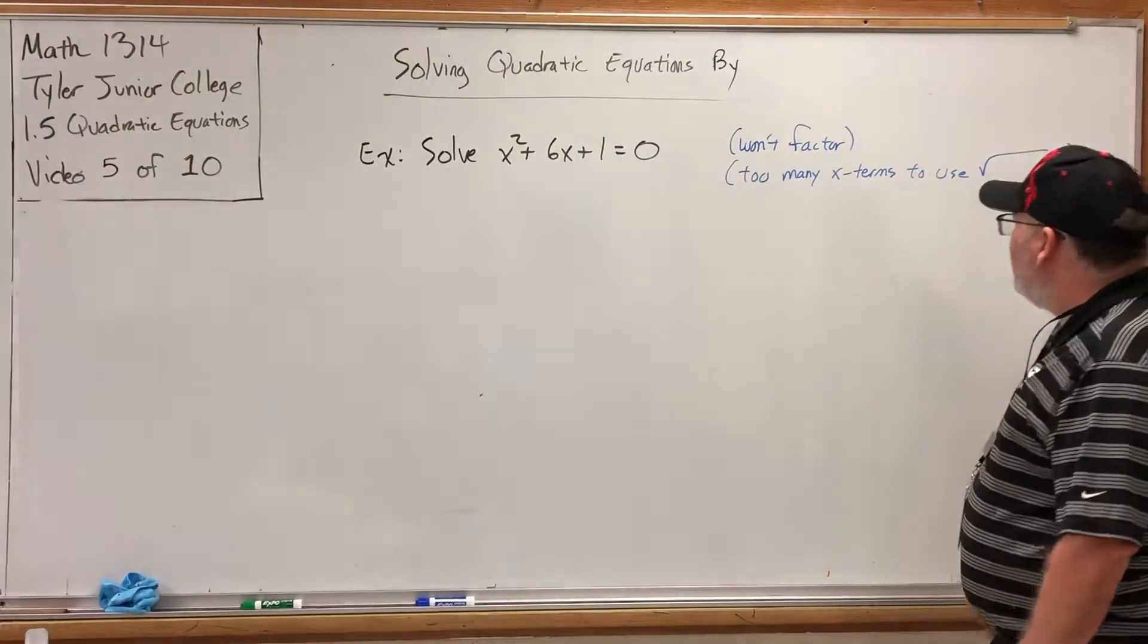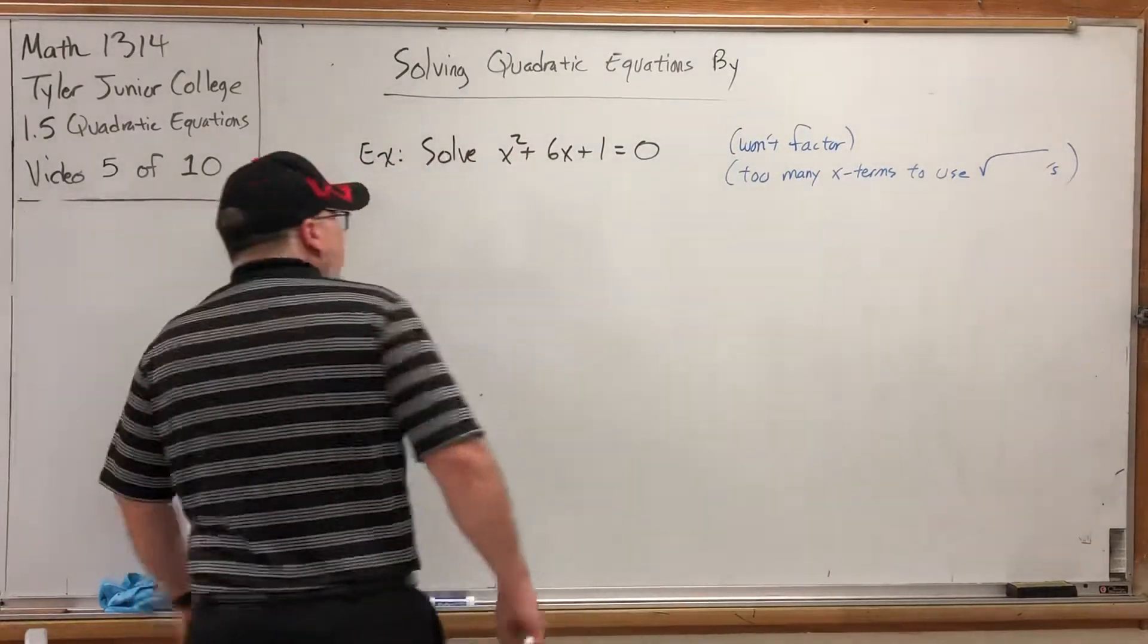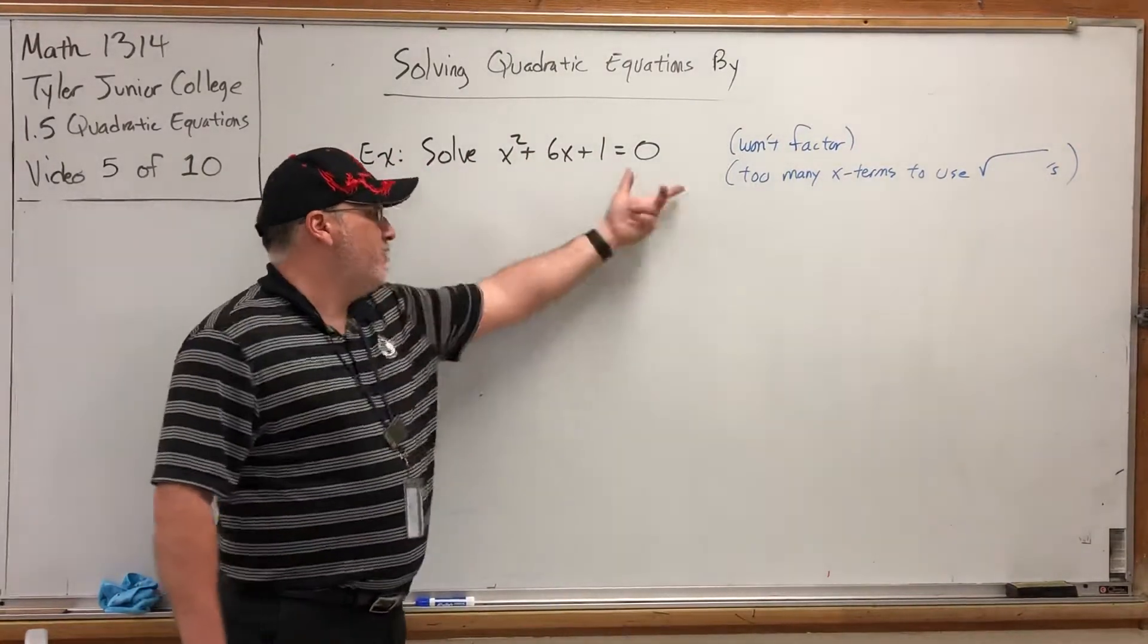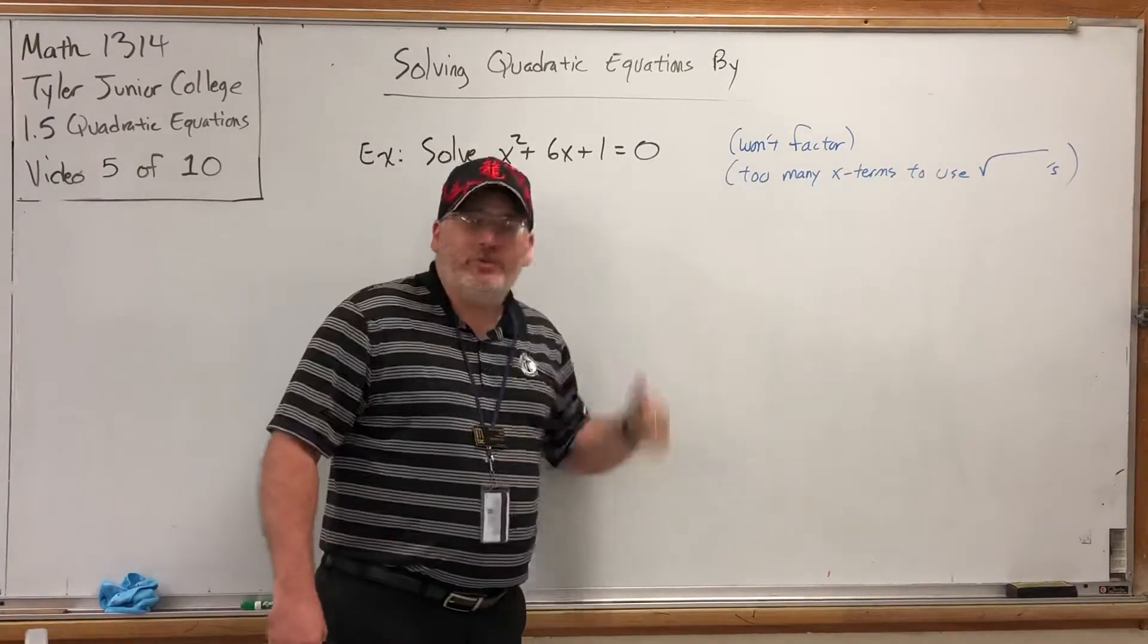And there were too many terms to try to solve using square roots. Because if we did the procedure, we would isolate the x squared by moving everything to the right and hit both sides with the square root. But then this x term would be trapped and we'd be stuck.